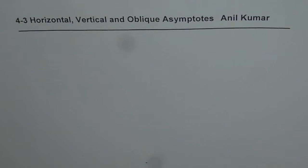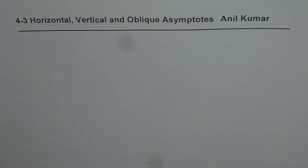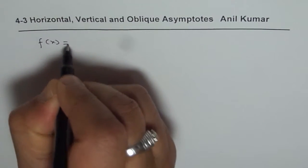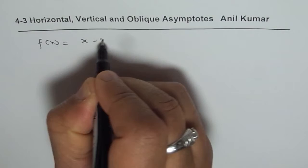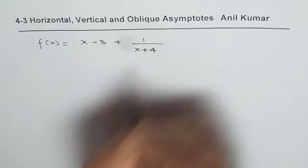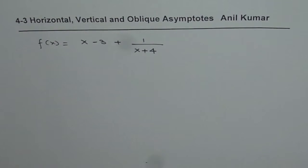I'm Anil Kumar and in this video we'll analyze a given function for the asymptotes and we'll also discuss the behavior of the function near the asymptotes. Let us say we have a function f of x equals x minus 3 plus 1 over x plus 4. I've purposely taken this simple equation so that we can understand how to find asymptotes and see the behavior of the curve near the asymptotes.